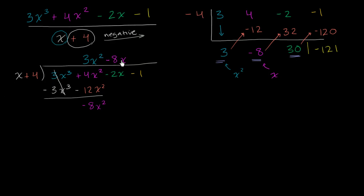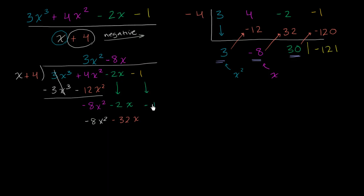So you have negative 8x times this business right over here. Negative 8x times x is negative 8x squared, and then negative 8x times 4 is negative 32x. We can bring down all of this business right over here so it becomes a little bit simpler. So you have a negative 2x, and then over here you have a minus 1. When you're doing traditional algebraic long division, you're going to subtract this from that up there — which is like adding the negative. So we are left with these characters canceling out: negative 2x plus 32x gives us a positive 30x.